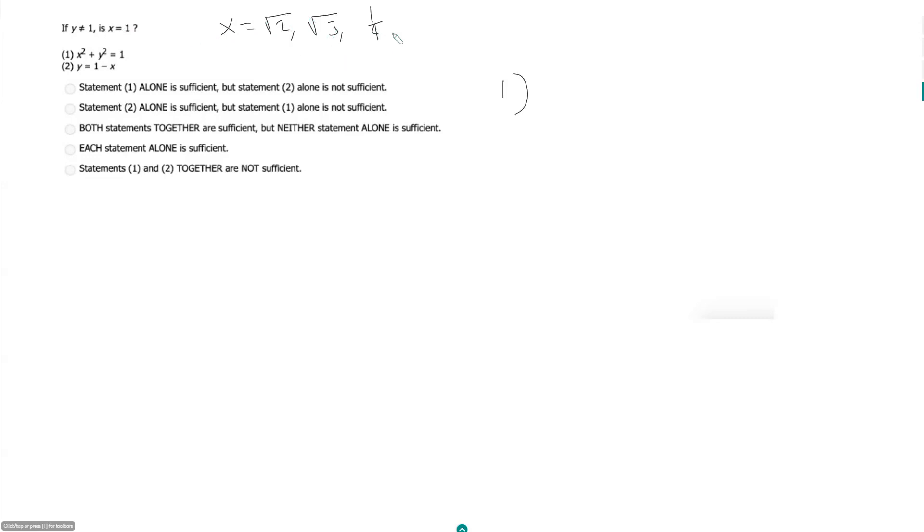So as of now based on these values, this would be sufficient. It would be sufficient to say no, because to prove insufficiency we need one value for x that is equal to 1 and one value that is not equal to 1. And right now we only have values not equal to 1. So keep that in mind here.